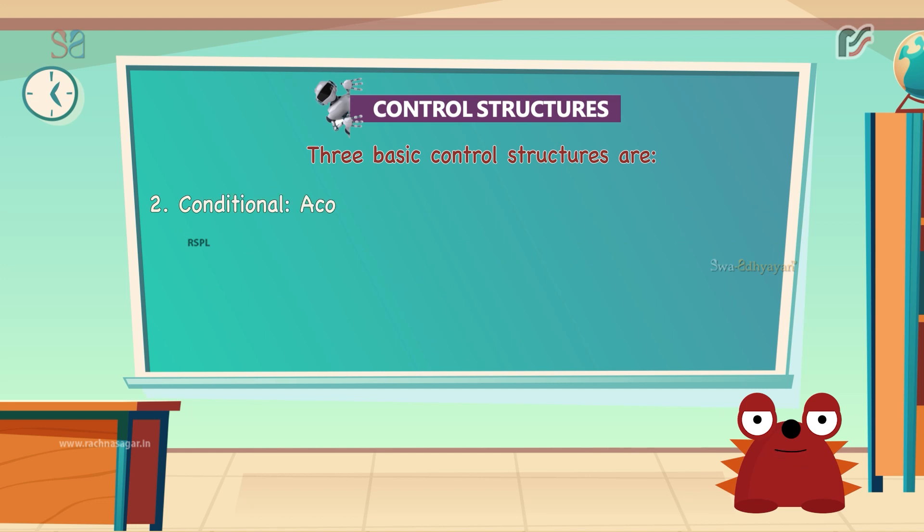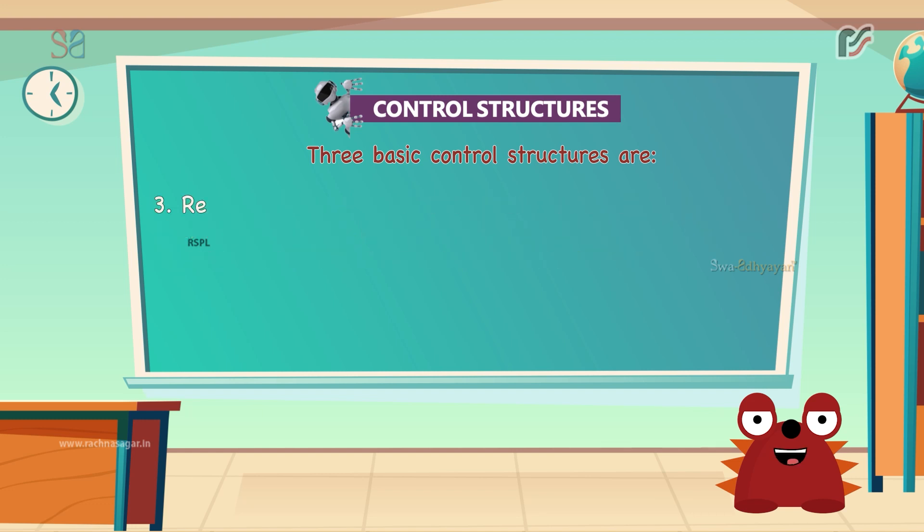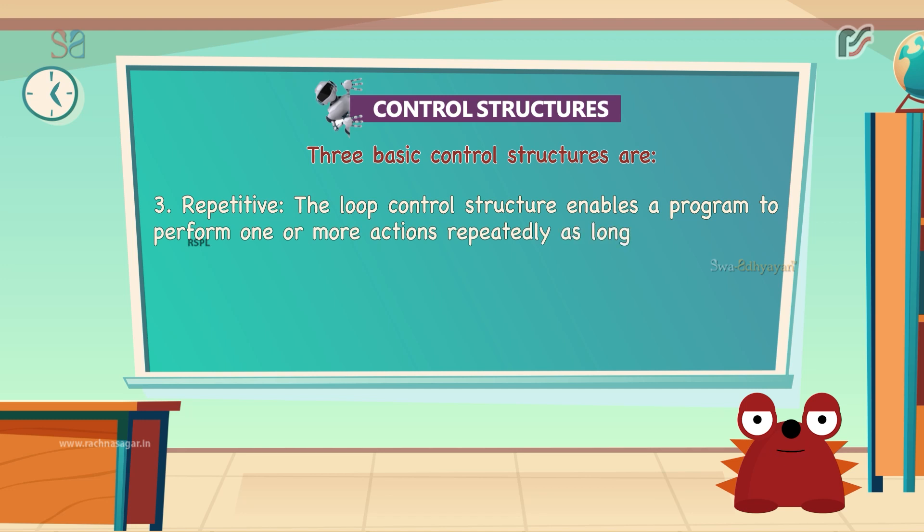The second basic control structure is conditional. A conditional control structure tells the program what action to take based on a certain condition. If, if else and nested if else come under this structure. The third and last is repetitive. The loop control structure enables a program to perform one or more actions repeatedly as long as a certain condition is met.